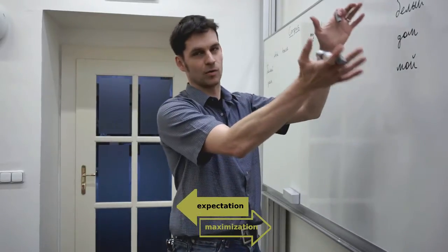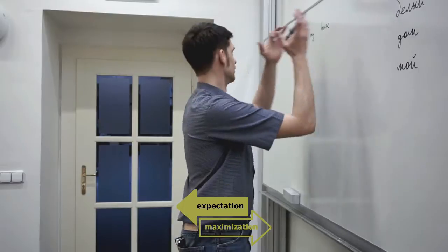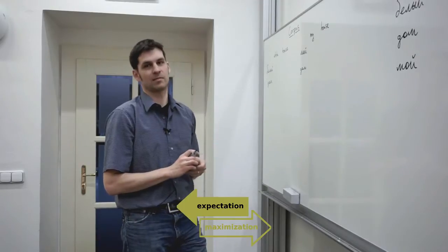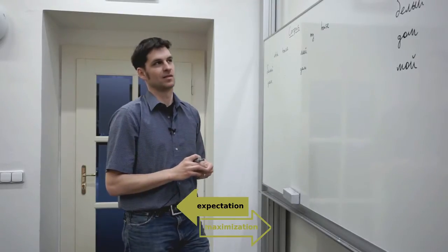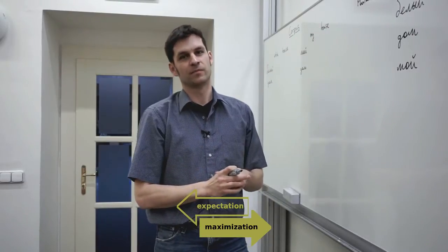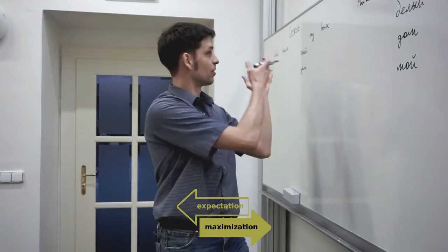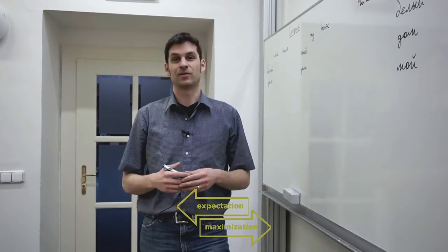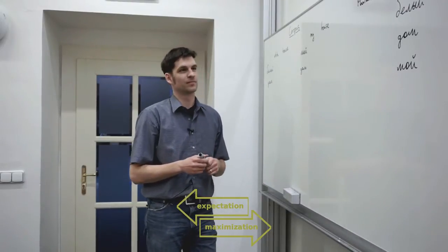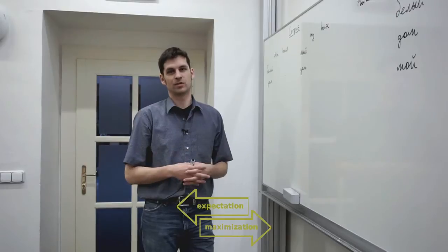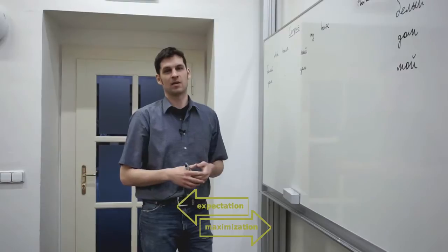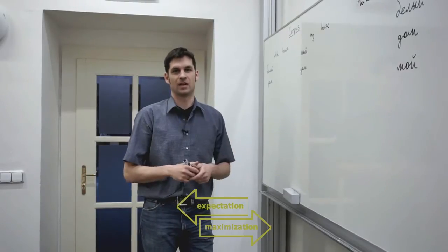In the expectation step, you have all your knowledge stored in the model in the dictionary and you put it to the data and you are expecting, you're finding what is the expected alignment given your dictionary. In the maximization step, you update your probability table, you update your dictionary to maximize the probability of the data that you are actually looking at. Back to our example, the good thing about the algorithm is that it is totally unsupervised. So you can start with no information at all with just some random alignments and you will still end up after a few iterations with a reasonable dictionary and alignments.